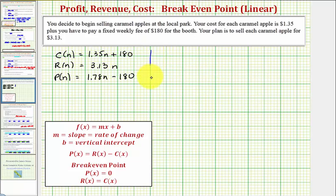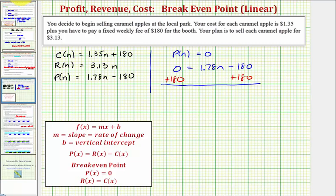So if we set the profit equal to zero, we want to solve the equation 0 = 1.78n - 180. Let's go ahead and add 180 to both sides, which would give us 180 = 1.78n. And now to solve for n, we would divide both sides by 1.78.